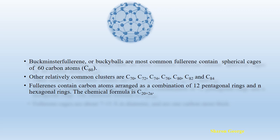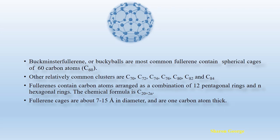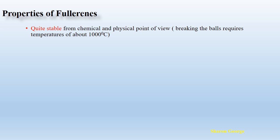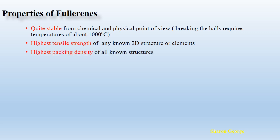About the size: the fullerene cages are about 7 to 15 Ångströms in diameter and are one carbon atom thick. Fullerenes have a unique structure and therefore unique properties. One important property is that the fullerene structure is quite stable from both chemical and physical points of view. To break these structures, temperatures of around 1000 degrees Celsius are required. Another important property is that fullerenes have the highest tensile strength among other non-tubular structures, and also the highest packing density.